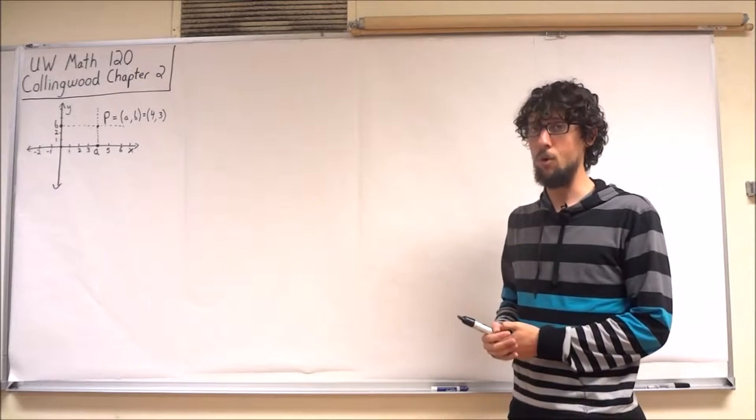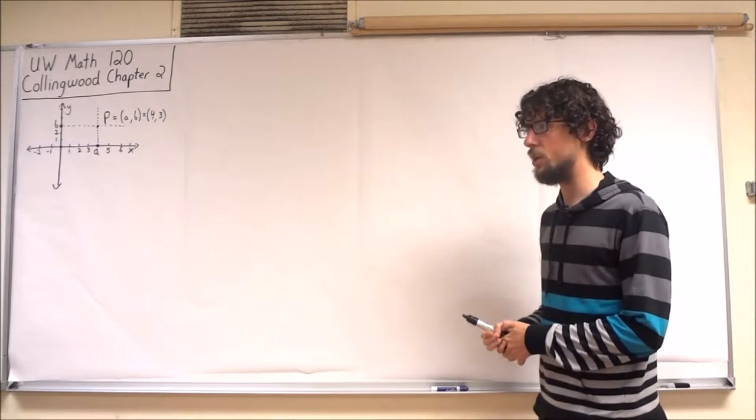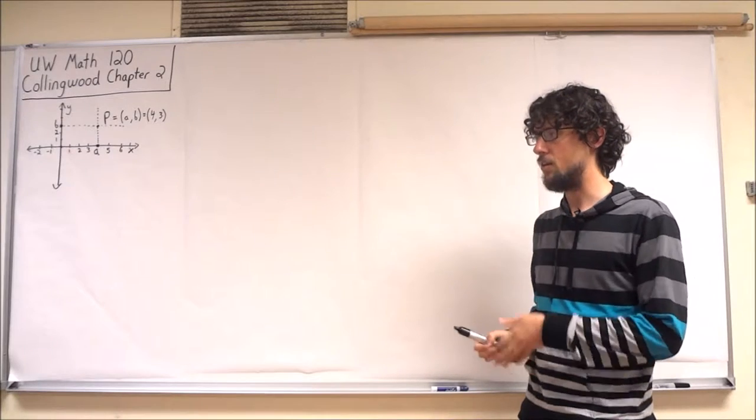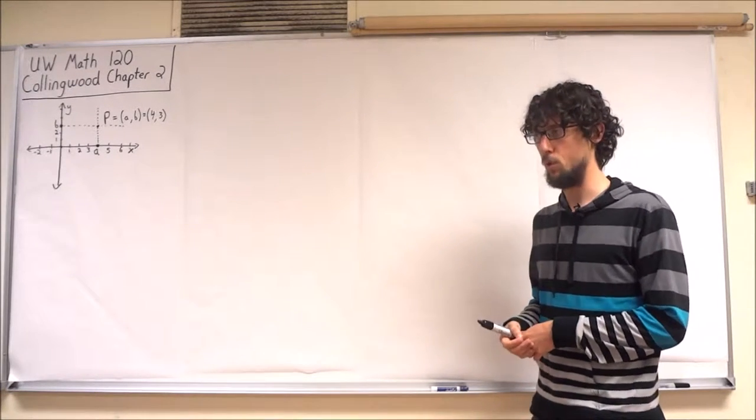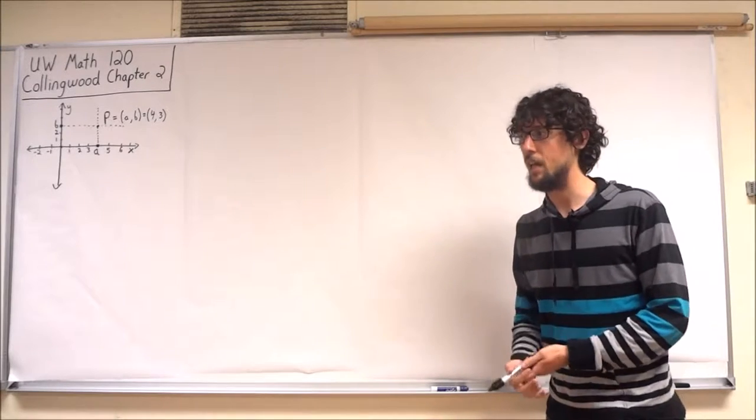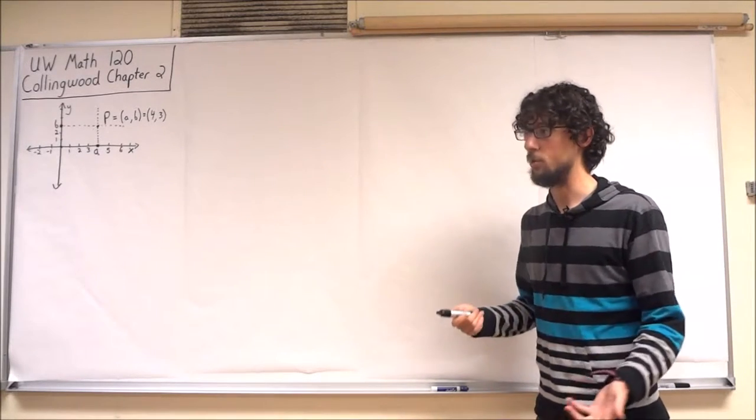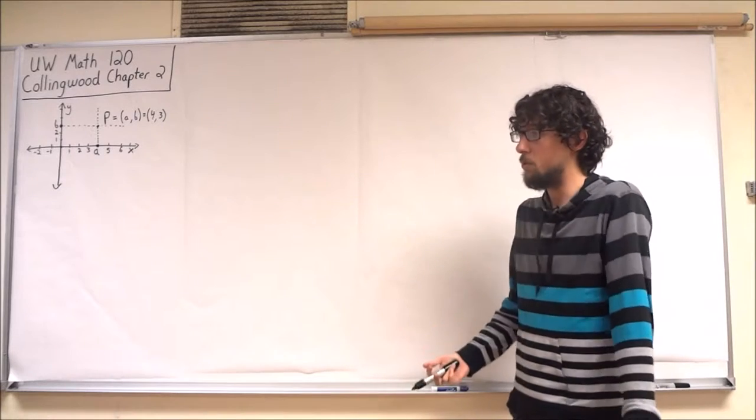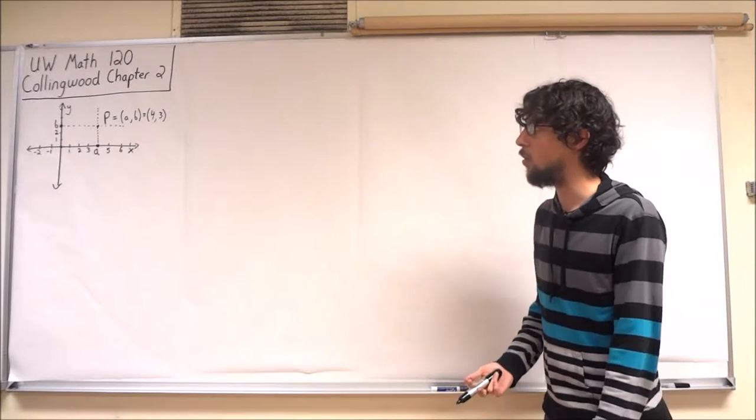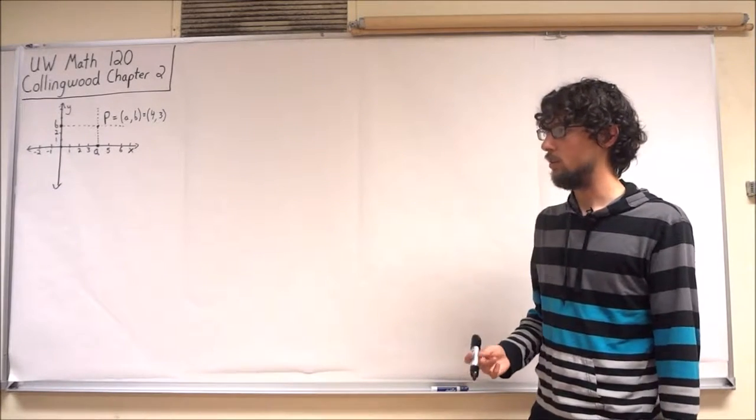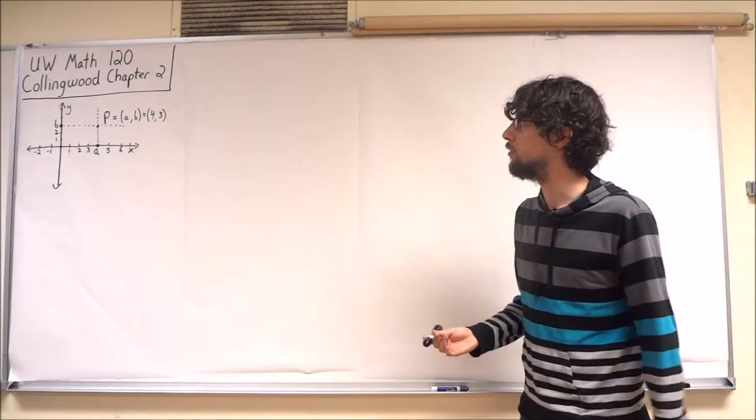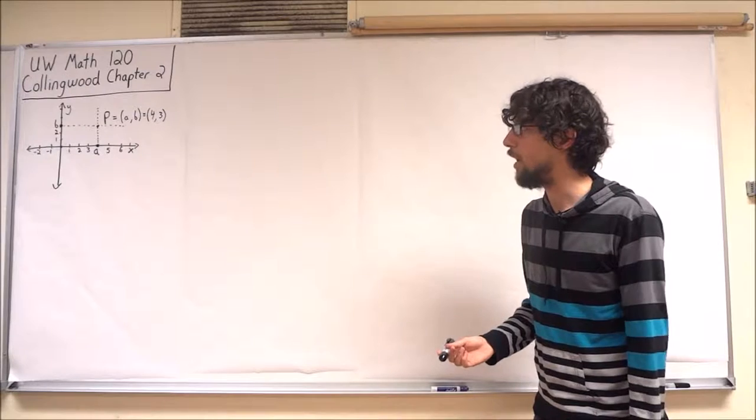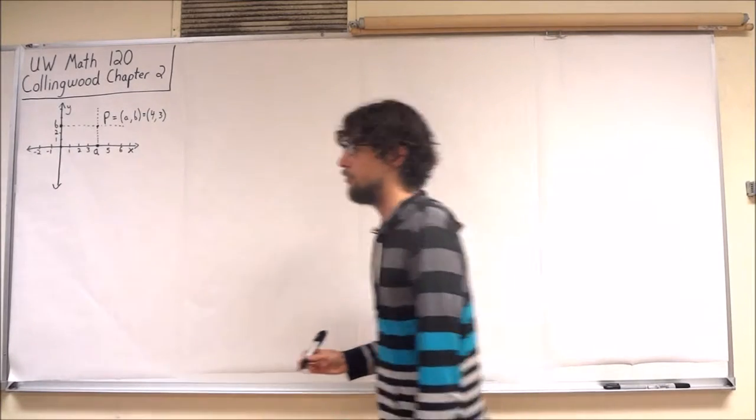The data is given to us in the form of a table. And we notice in the table that the first column represents the week number: week number 1, week number 2, week number 3. And the second number represents the total sales. So we can represent this using a coordinate system. In particular, we have a bunch of pairs of values.